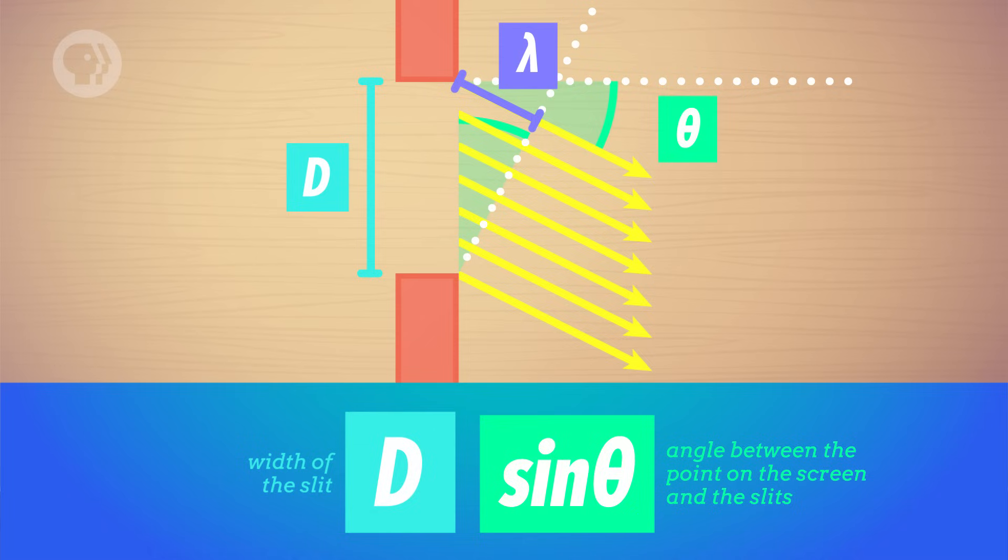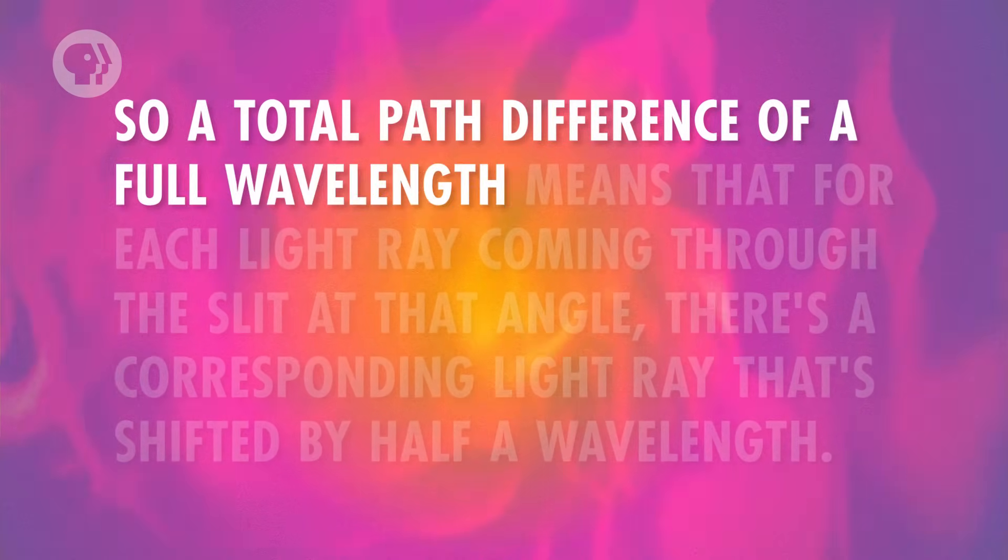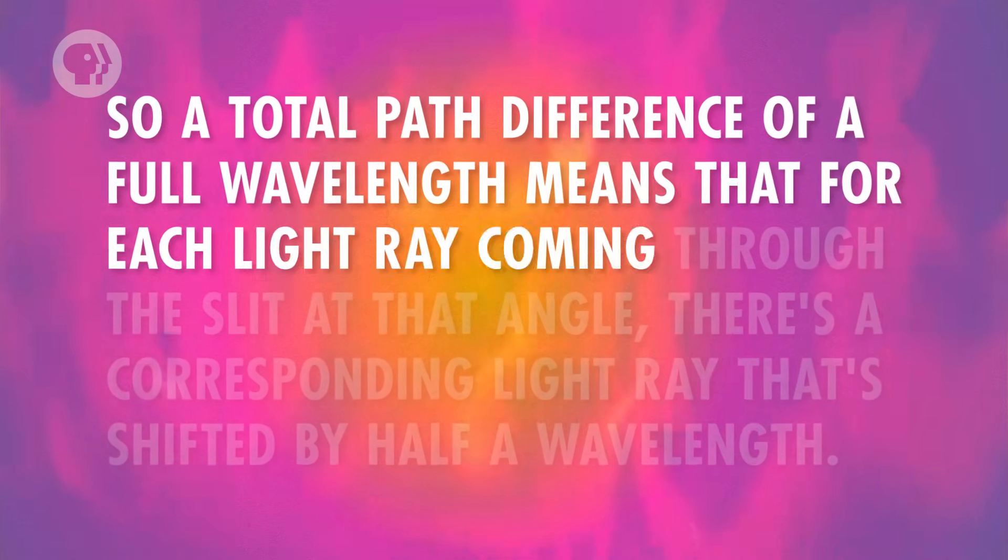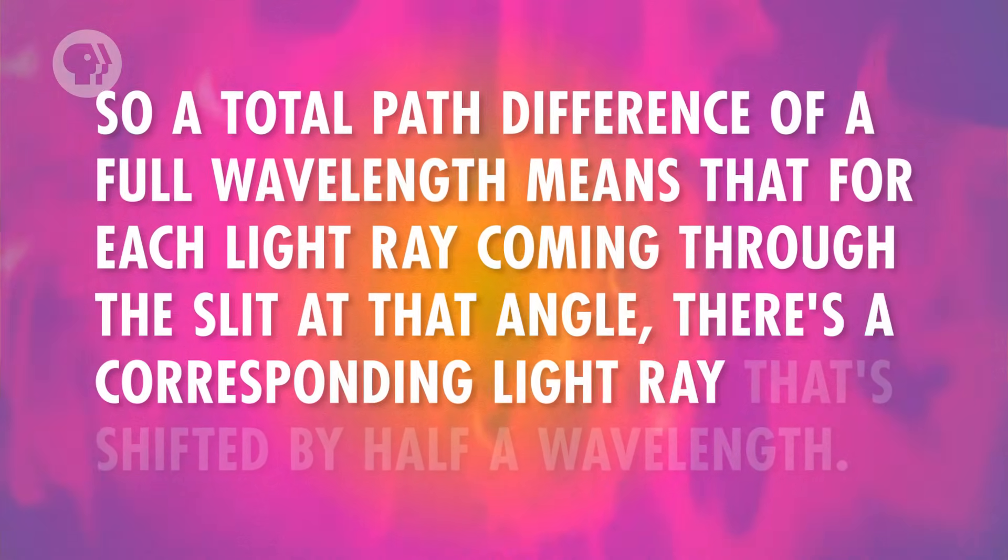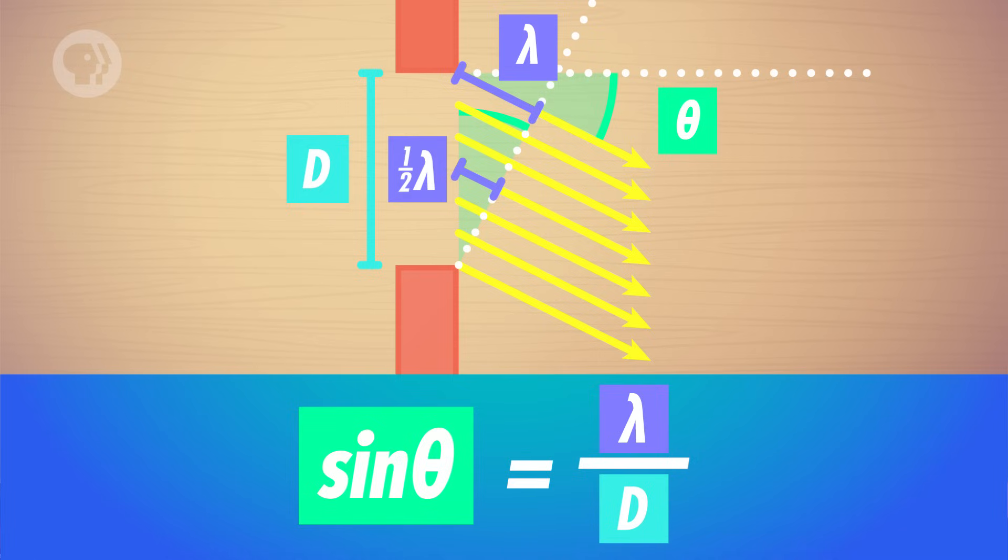If the path difference is one wavelength long, then the path difference between the light from the top of the slit and the light from the center of the slit is only half a wavelength. The same holds true for the path difference between the light from the center of the slit and the bottom. So a total path difference of a full wavelength means that for each light ray coming through the slit at that angle, there's a corresponding light ray that's shifted by half a wavelength. And remember, when waves of light are shifted by half a wavelength, that means one wave's crest lines up with the other's trough, causing destructive interference. So, for a single slit when the total path difference is equal to a full wavelength, you end up with pairs of waves that cancel each other out and make a dark line.